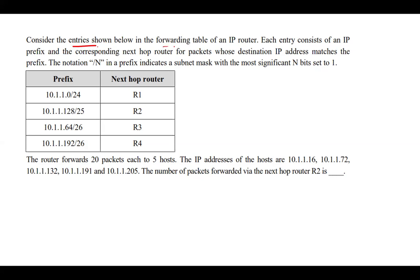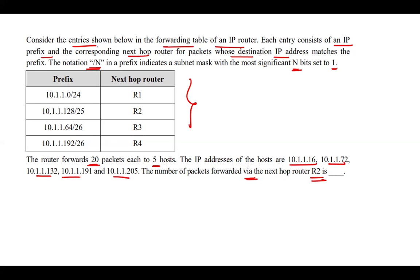Consider the entry shown below in the forwarding table of an IP router. Each entry consists of an IP prefix and the corresponding next hop router for packets whose destination IP address matches the prefix. The notation /n in a prefix indicates a subnet mask with the most significant n bits set to 1. The router forwards 20 packets each to 5 hosts. The number of packets forwarded via the next hop router R2 is to be determined.